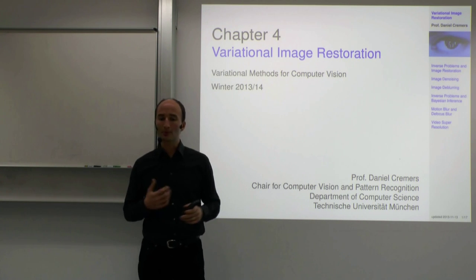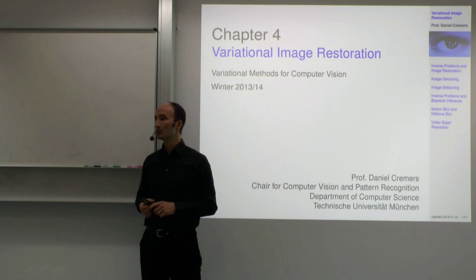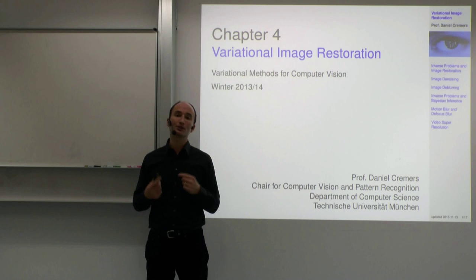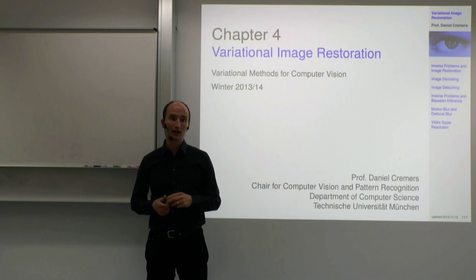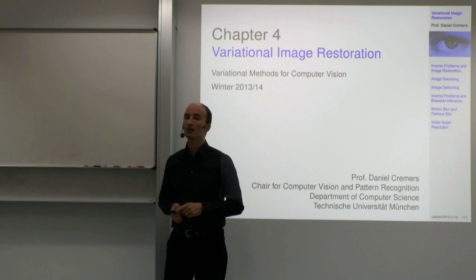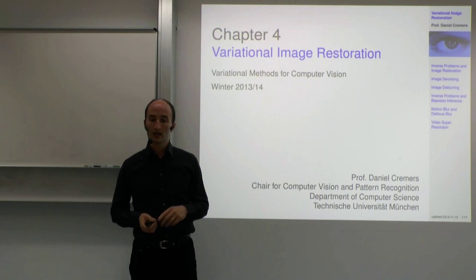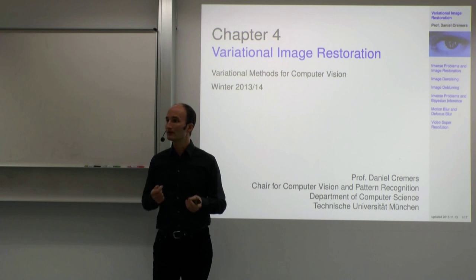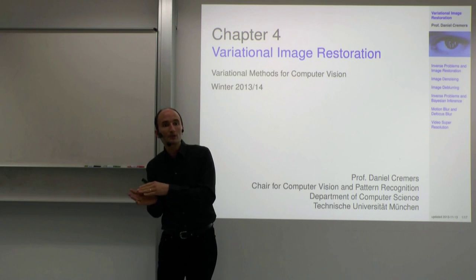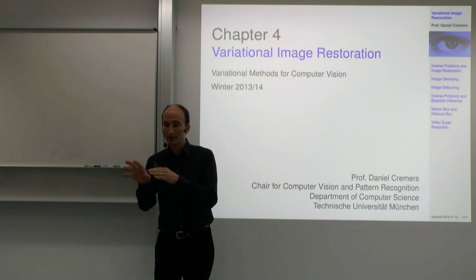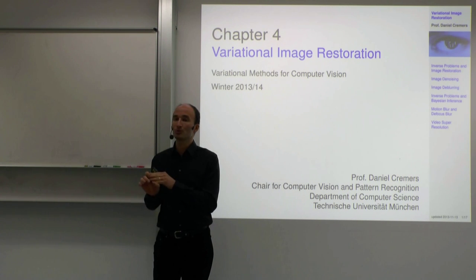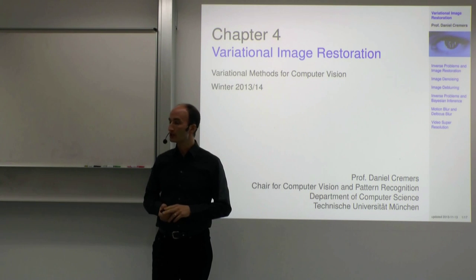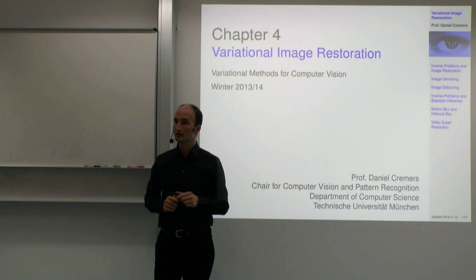Today we'll see a couple of examples of variational methods in computer vision, and the associated Euler-Lagrange equation, and also the gradient descent equation for some of the functionals. The reason I give these examples is to give you a better feeling for what variational methods do and how a certain cost function can represent a certain problem in image analysis and computer vision, and what the corresponding differential equations are that define the minimizer.